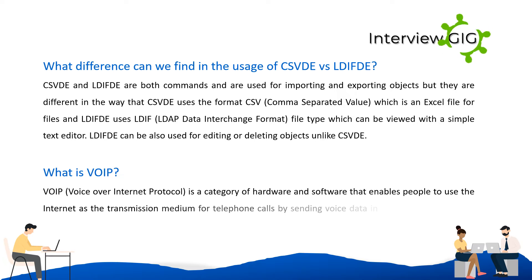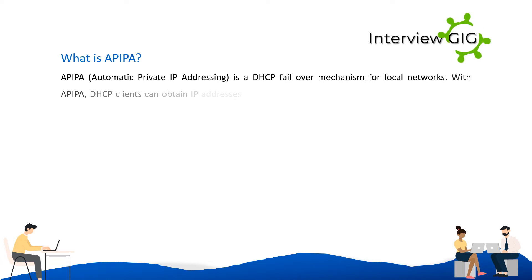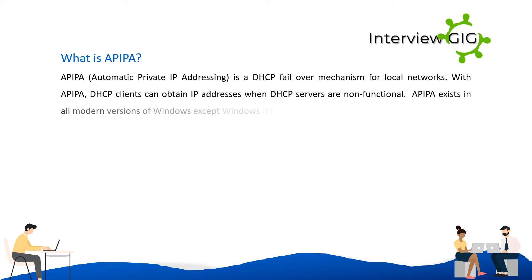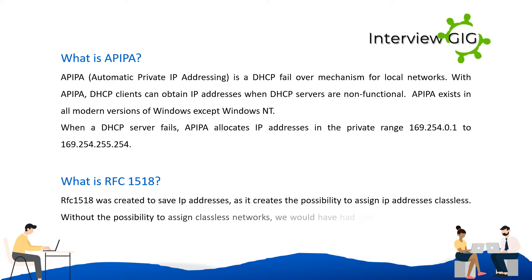What is VoIP? VoIP (Voice over Internet Protocol) is a category of hardware and software that enables people to use the internet as the transmission medium for telephone calls, by sending voice data in packets using IP rather than traditional circuit transmissions. What is APIPA? APIPA (Automatic Private IP Addressing) is a DHCP failover mechanism for local networks. When a DHCP server fails, APIPA allocates IP addresses in the private range 169.254.0.1 to 169.254.255.254. What is RFC 1518? RFC 1518 was created to save IP addresses by enabling classless IP address assignment.